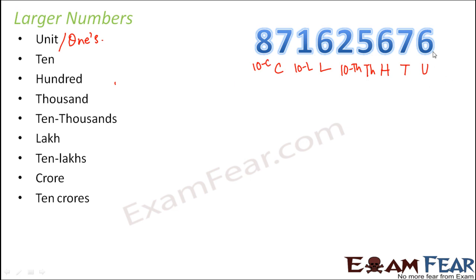Now why are these called as units place, tens place, hundreds place and so on? Because when you actually look at the expansion of this number you would always see that the units digit is multiplied by one. The tens digit or the digit at the tens place is multiplied by ten, the digit at the hundreds place is multiplied by hundreds, thousands place is multiplied by thousands and so on.